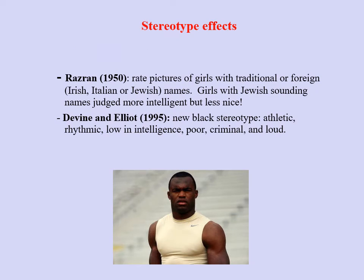Sometimes a name alone is sufficient to elicit stereotypical expectations. Resnick in 1950 found that pictures of girls with traditional or foreign names — Irish, Italian, or Jewish — resulted in stereotypic expectations: girls with Jewish-sounding names were judged as more intelligent but less nice. The content of stereotypes changes over time. Devine and Elliot in 1995 identified a new black stereotype — athletic and rhythmic, but still characterized as low in intelligence, poor, and more likely to be criminal and loud — quite different from the one identified by Katz and Braley in 1933.